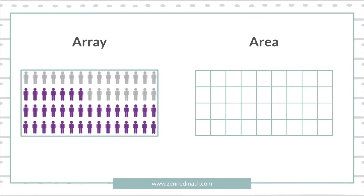Going back to why area and array are in different subsections: it's because area and arrays are not interchangeable. What they are, though, is symmetric. So I want to talk about what that means — that they are not interchangeable, but they are symmetric.